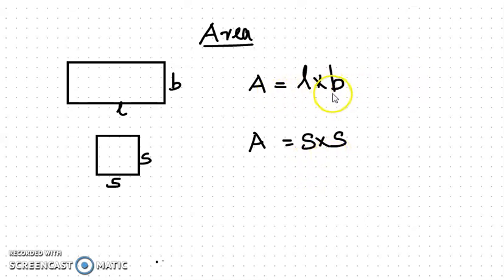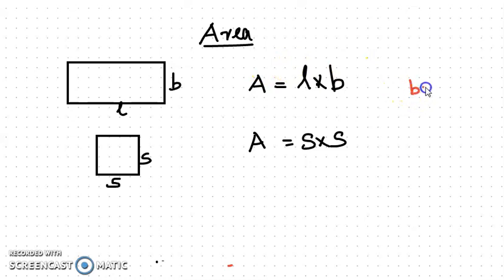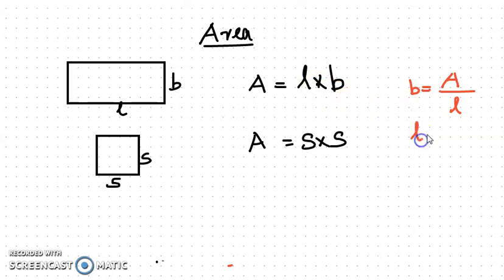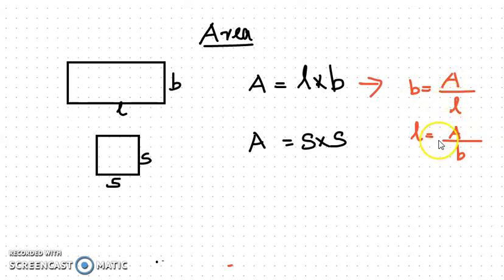Remember these formulas: area of a rectangle is L into B. If area and length are given, breadth equals area divided by length. If area and breadth are given, length equals area divided by breadth.